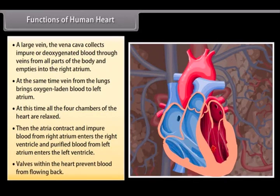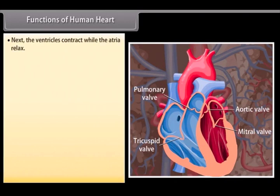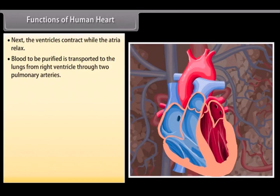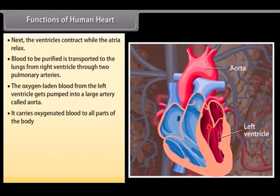Valves within the heart prevent blood from flowing back. Next, the ventricles contract while the atria relax. Blood to be purified is transported to the lungs from right ventricle through two pulmonary arteries. The oxygen-laden blood from the left ventricle gets pumped into a large artery called aorta. It carries oxygenated blood to all parts of the body.